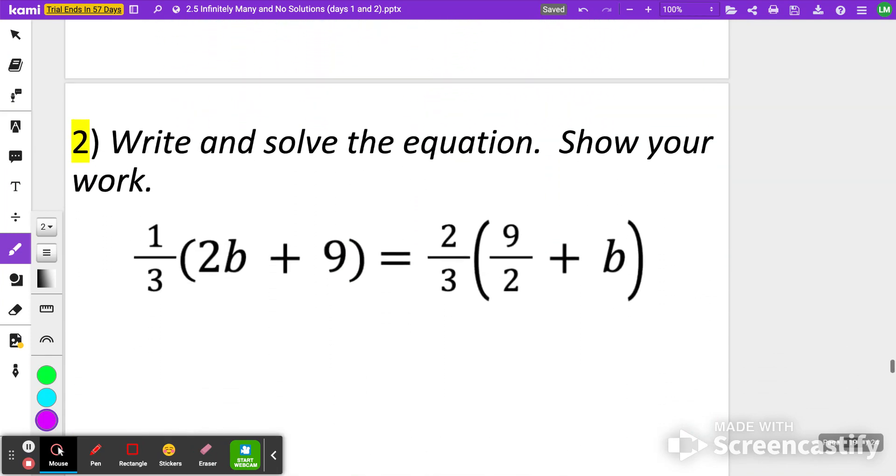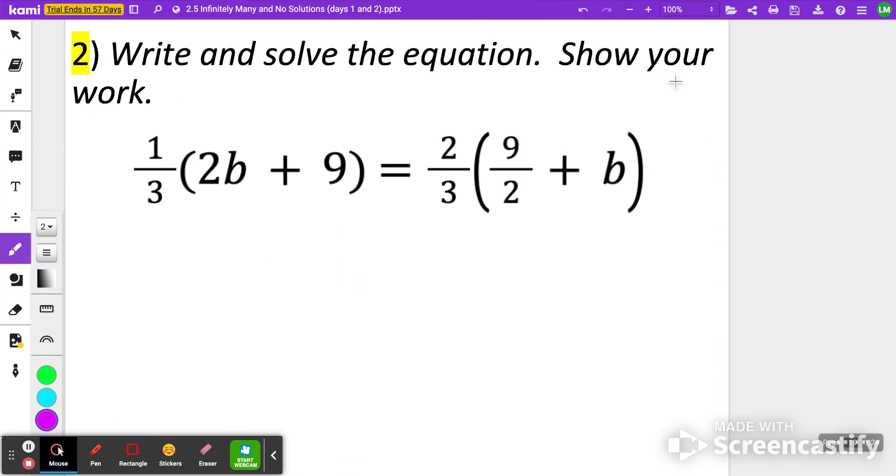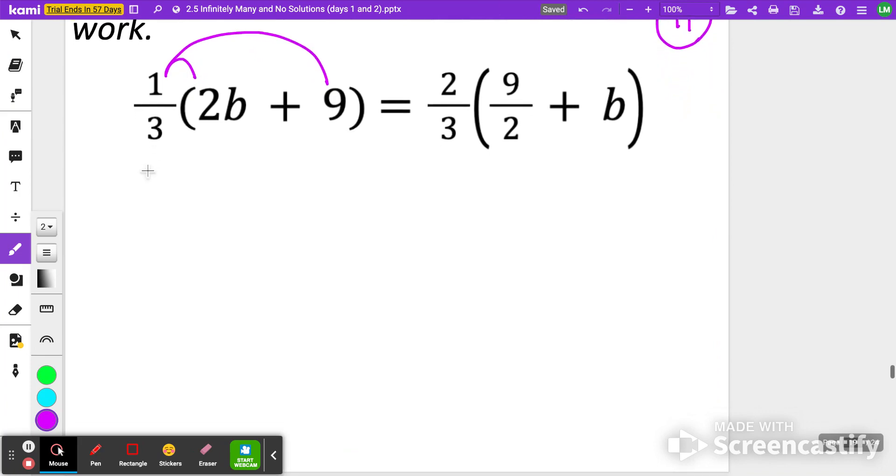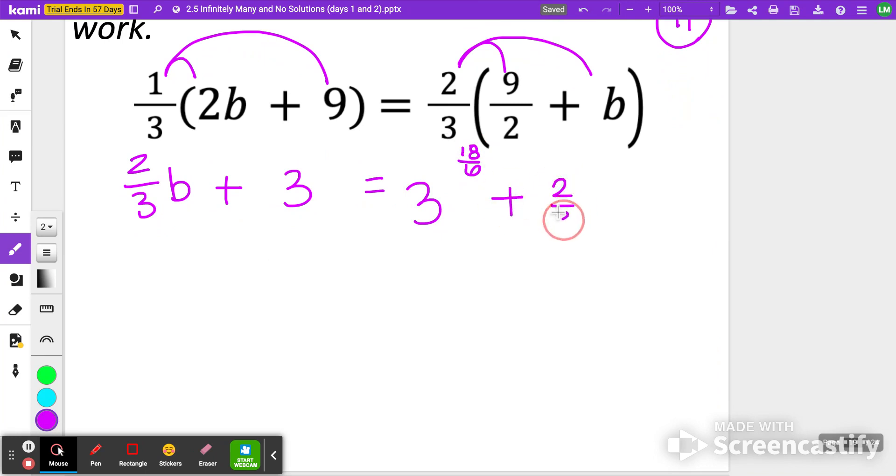Let's try this one, writing and solving the equation. Show your work. Again, when you're ready, go ahead and pause the video. Try it on your own. And when you're ready to check it, click play. First thing I'm going to do is do a lot of distribution. Let's start with the left side. 1 third times 2b. That is 2 thirds b plus 1 third of 9 is 3. Then over here, I'm going to do 2 thirds times 9 over 2. And then 2 thirds times b. 2 times 9 is 18 and 3 times 2 is 6. 18 over 6 is equal to 3. And 2 thirds times b is just another 2 thirds b.